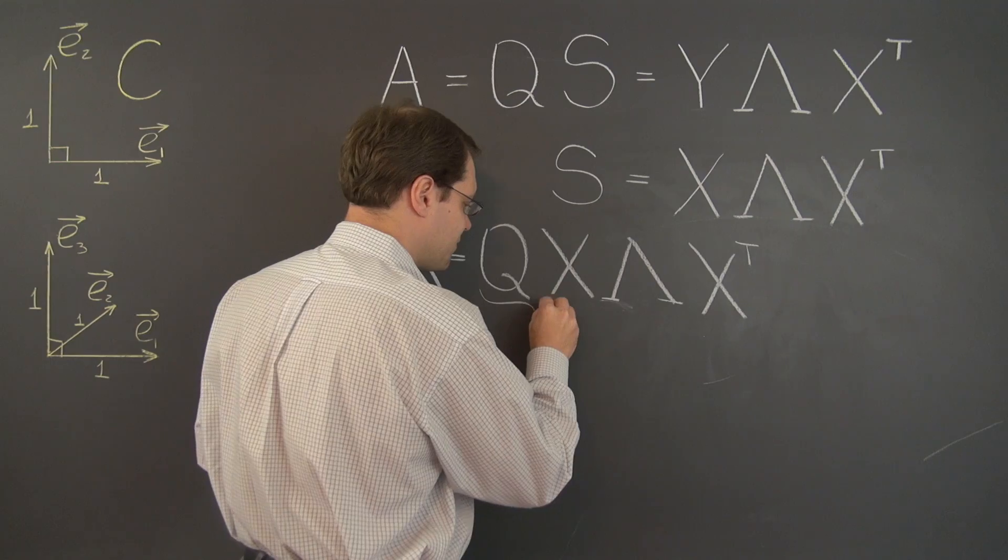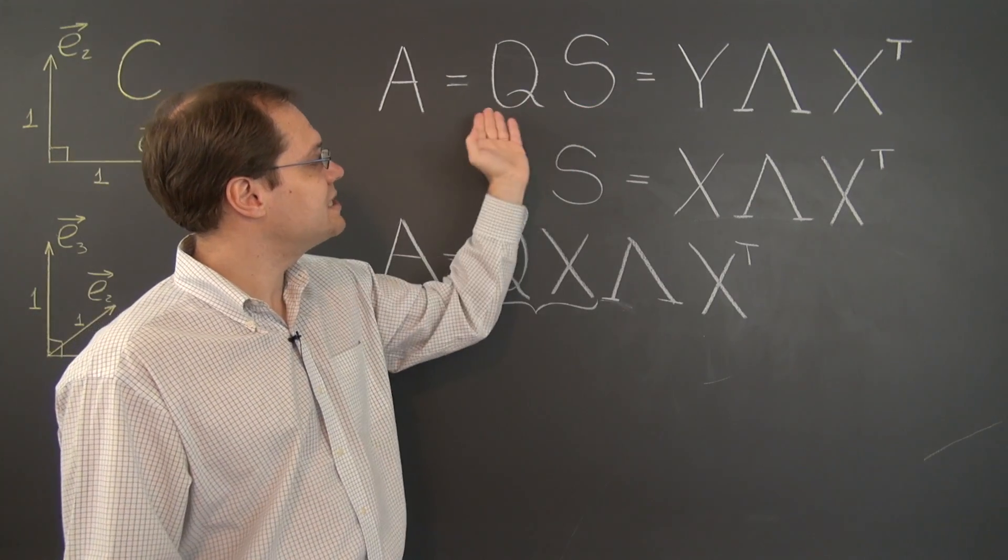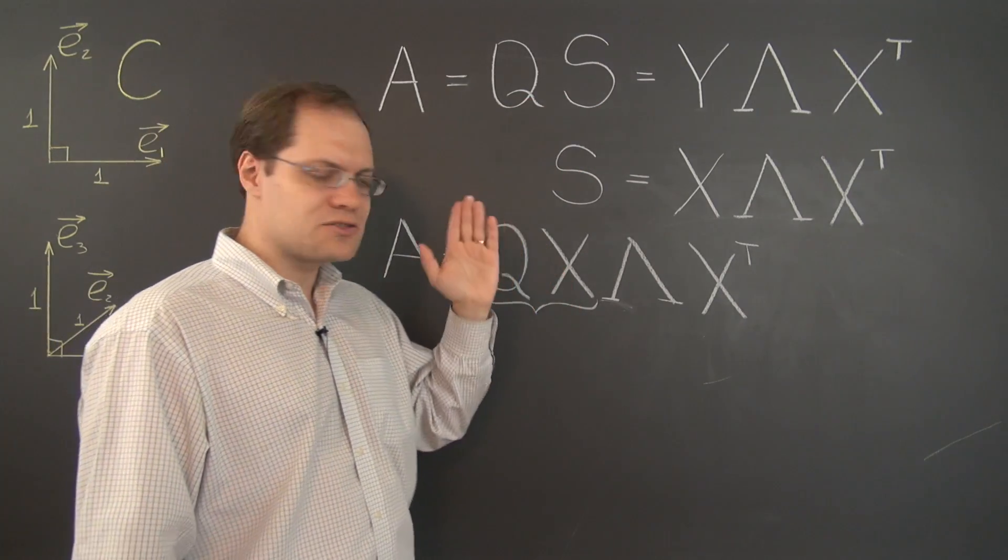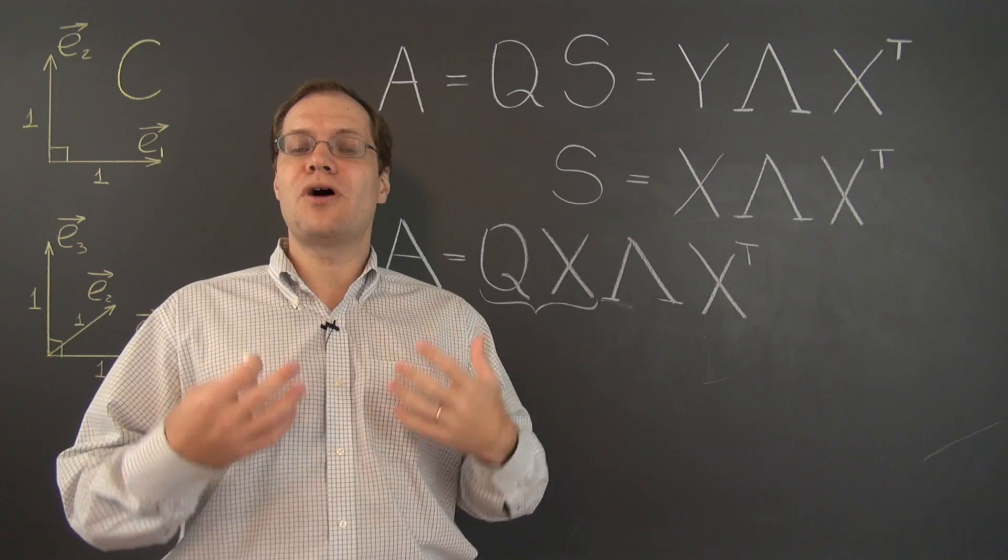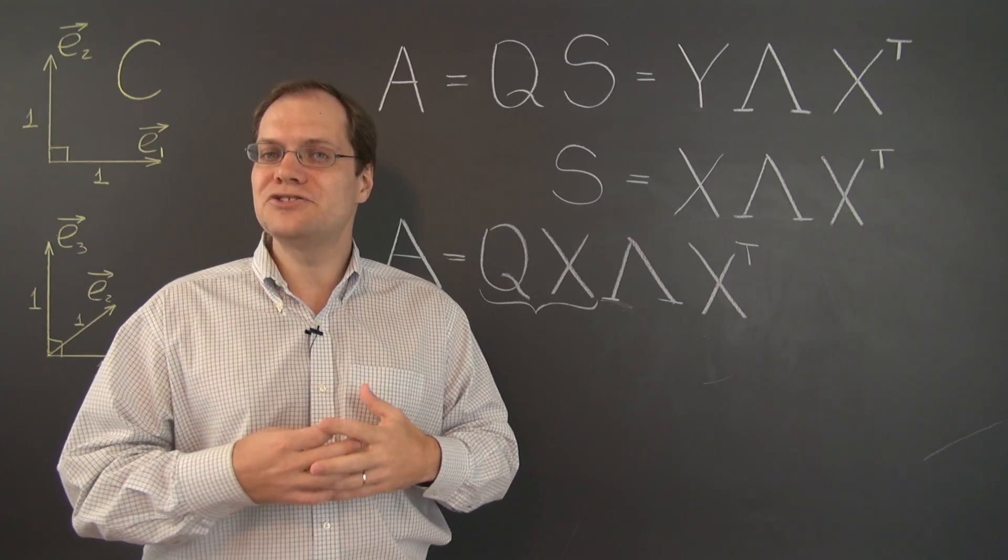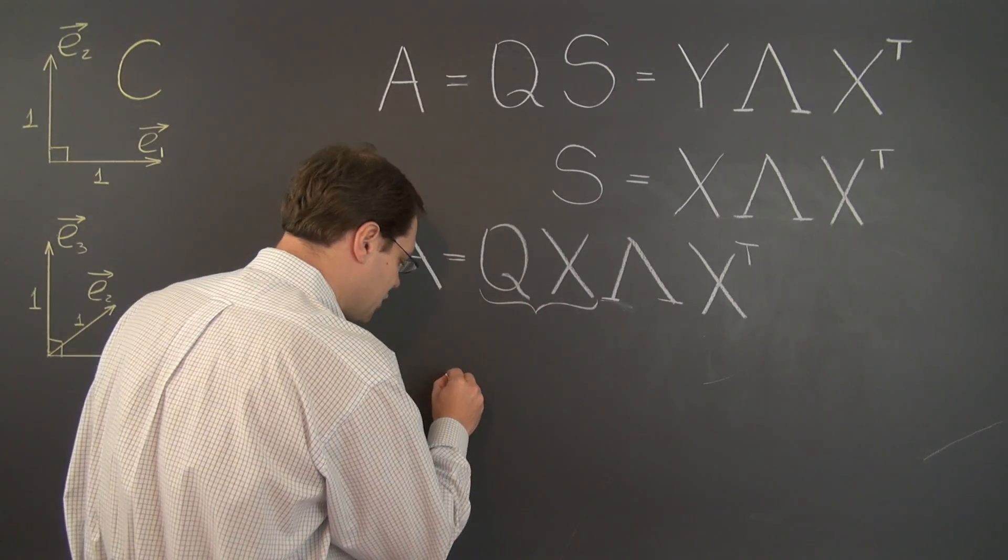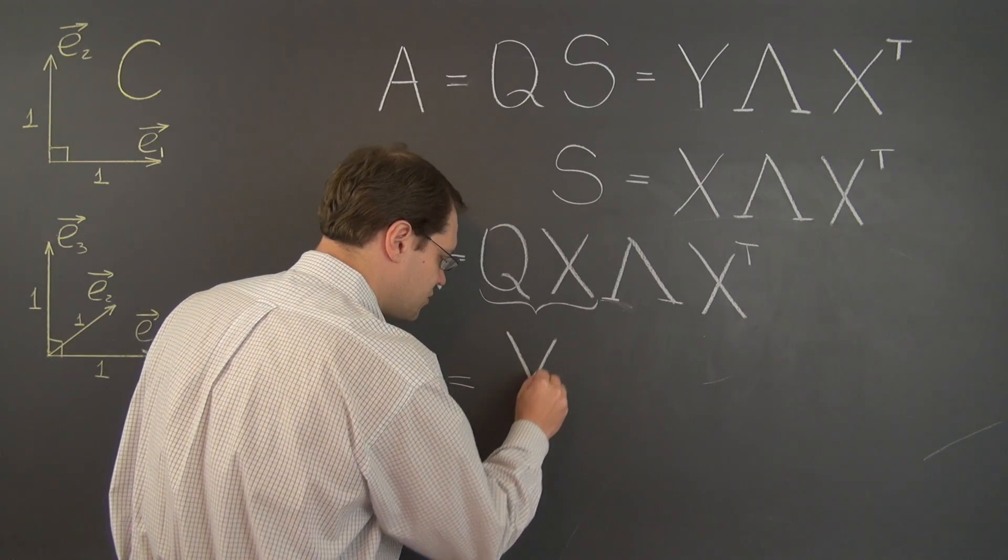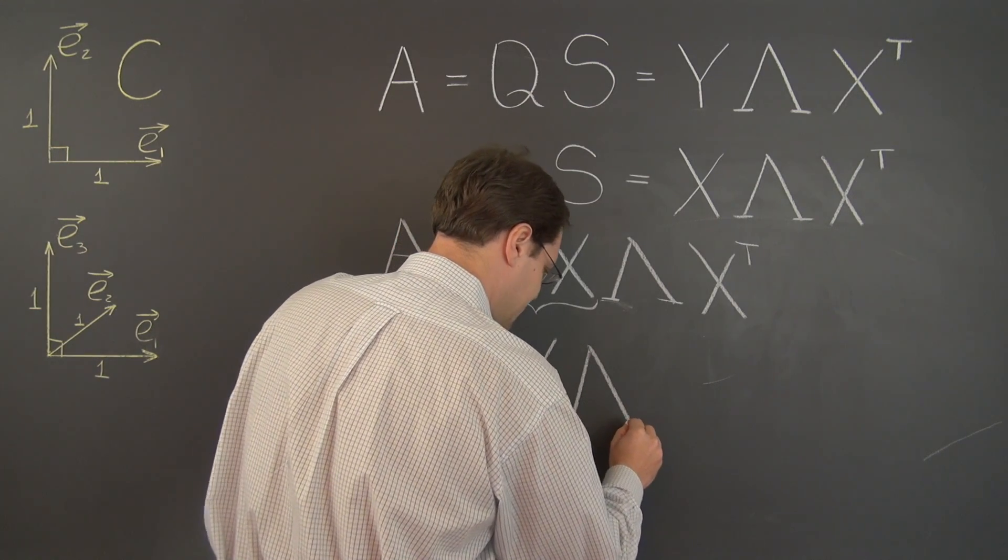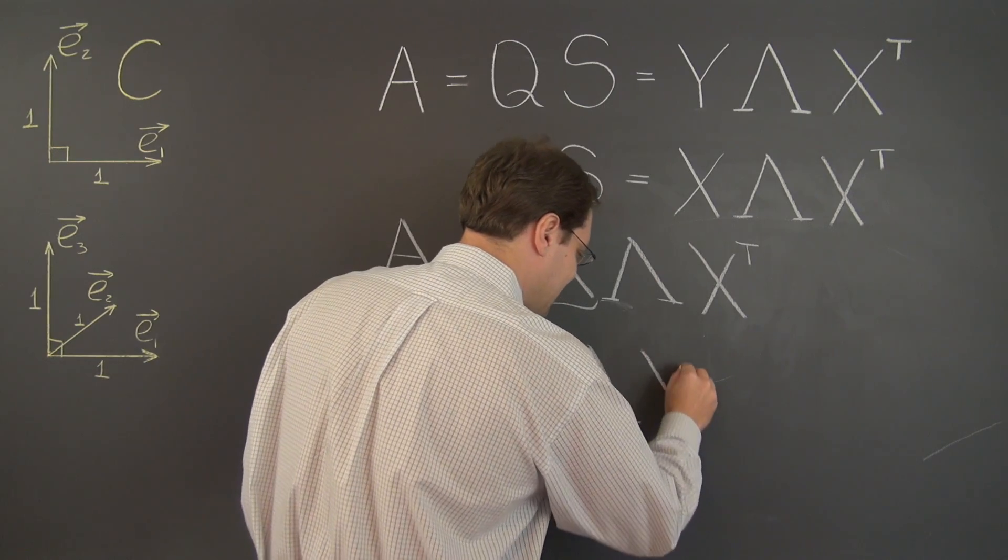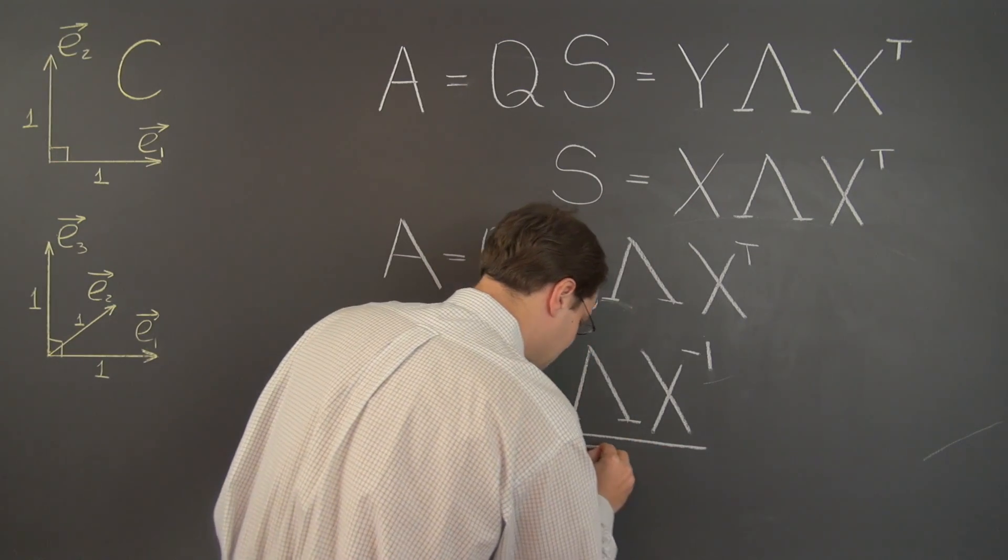Except, of course, when we look at these two matrices, we realize that both of them are orthogonal. The matrix Q was orthogonal by the definition of this decomposition and the matrix X is orthogonal for reasons we have just discussed. And we have discovered earlier that the product of two orthogonal matrices is itself an orthogonal matrix. So this is also an orthogonal matrix and we're going to give it a name. We're going to call it Y. So we end up with Y, lambda, X inverse. And that right there is the singular value decomposition of the matrix A.